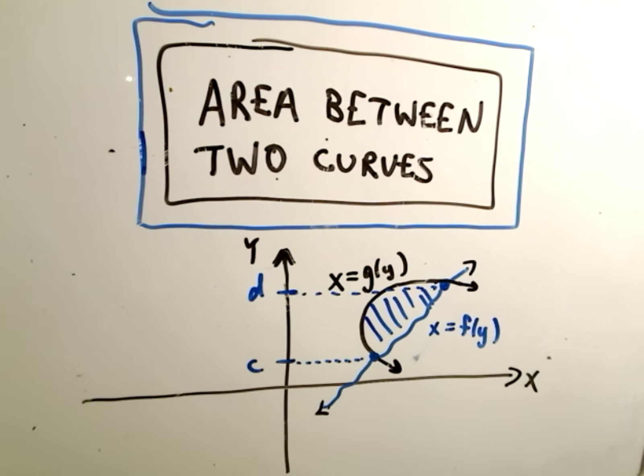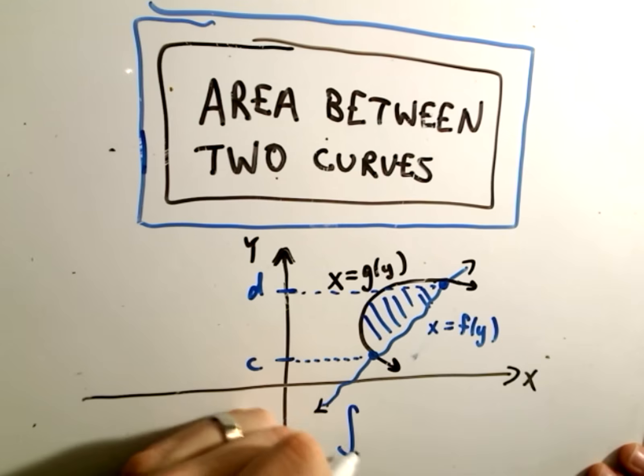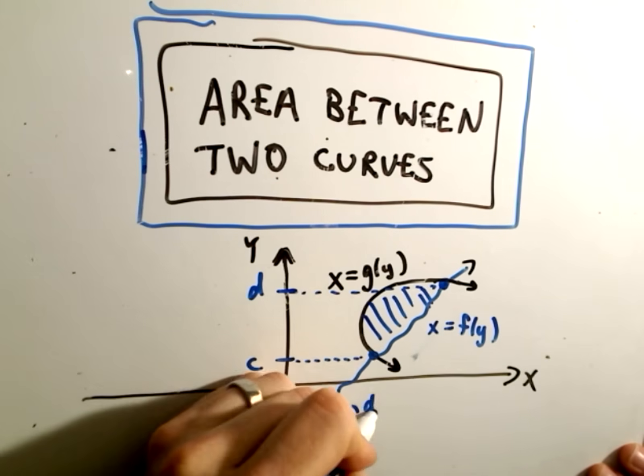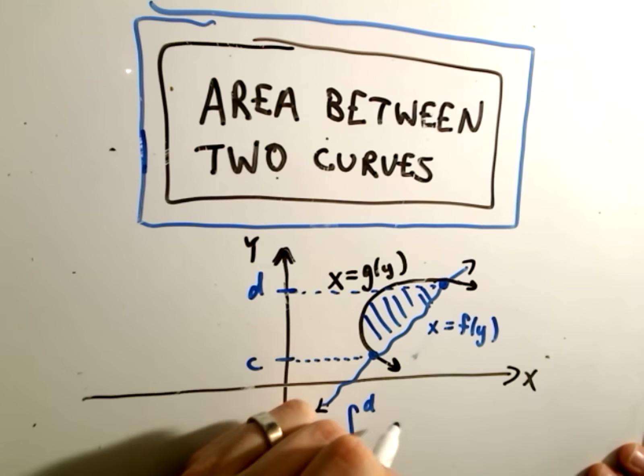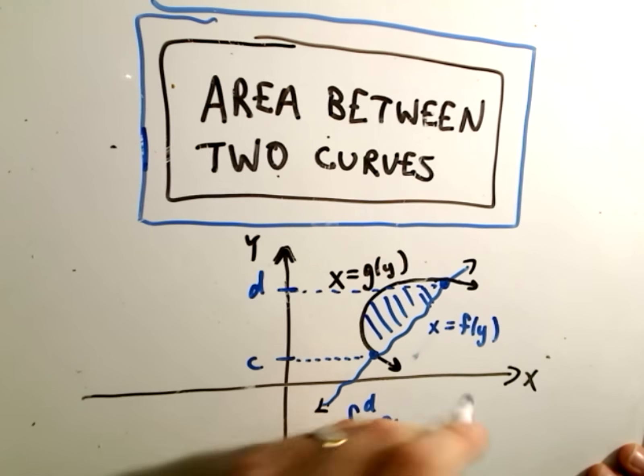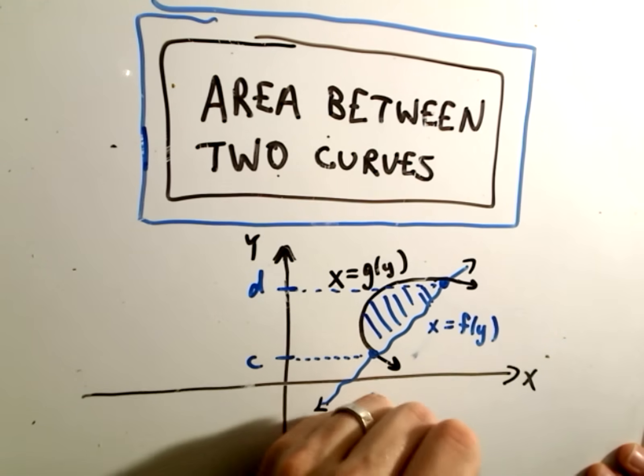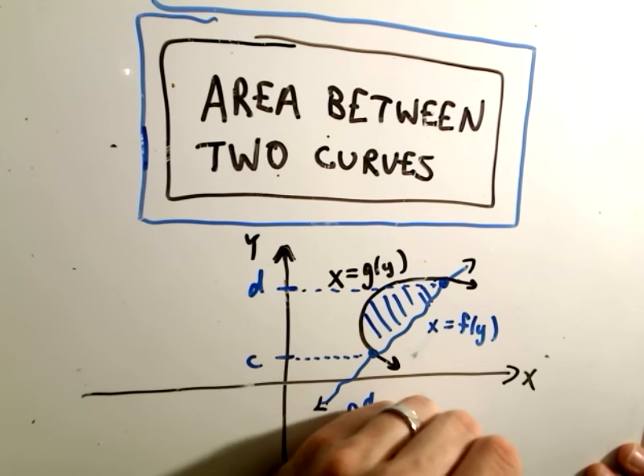You find those usually by setting them equal to each other. It just depends on the function that you have and how difficult that is to do. But for most problems you see in calculus, you'll just set them equal to each other and do substitution. And then in order to integrate, you take the lower limit to the upper limit, and then you take basically the rightmost function minus the leftmost function.